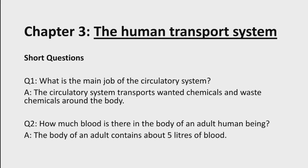Question No. 1: What is the main job of the circulatory system? Answer: The circulatory system transports wanted chemicals and waste chemicals around the body. Body میں جتنے بھی wanted and waste chemicals نے transport ہونا ہوتا ہے، انہیں circulatory system transport کرتا ہے from one place to another.